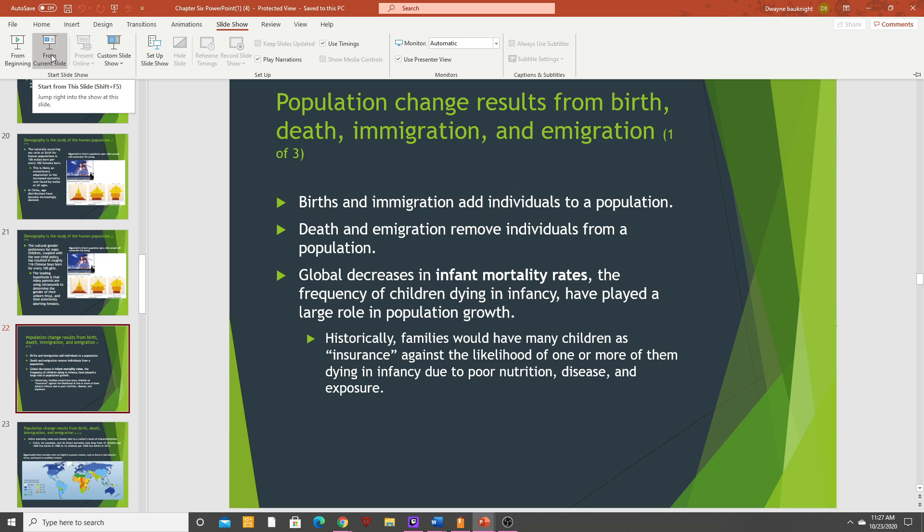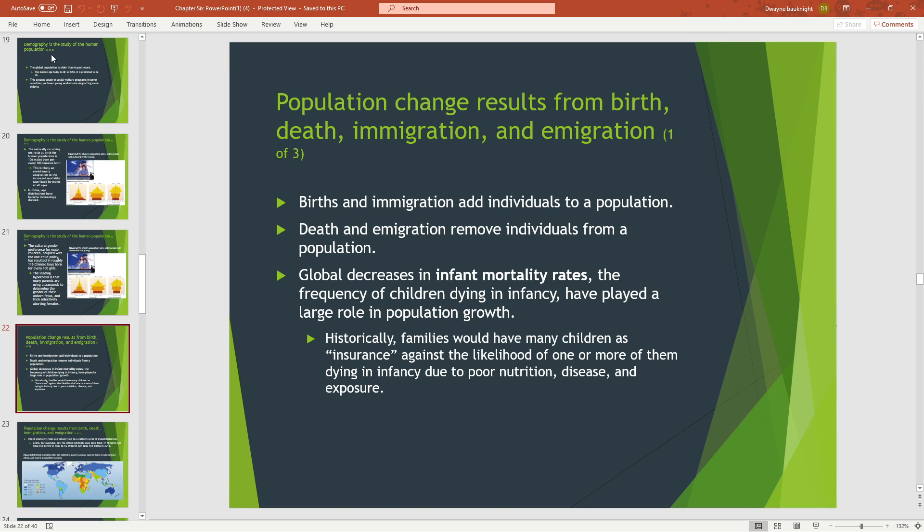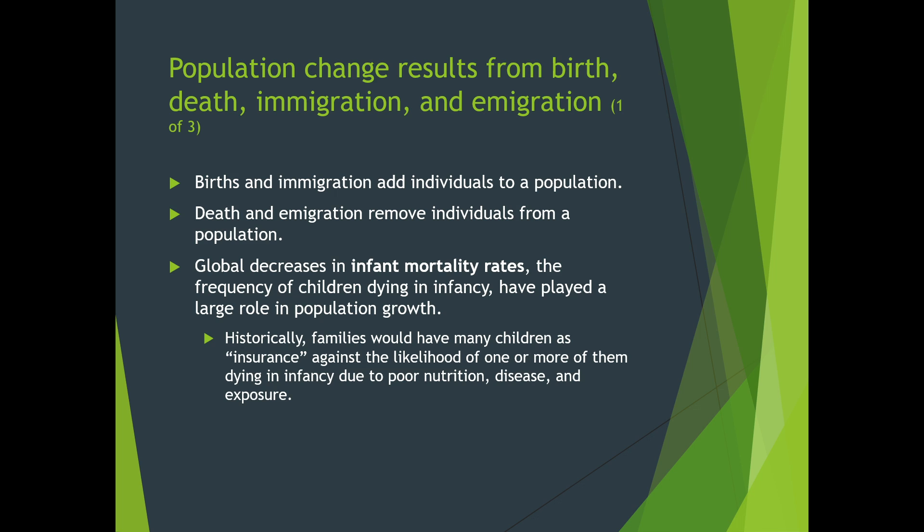This time we are going to talk about what happens when humanity transitions into what's called a developed nation, and how populations change over time. Populations change as a result of births, deaths, and immigration. When we look at population size, we look at births and immigration coming in, and subtract deaths and emigration — people leaving the country — and that gives us our population numbers.